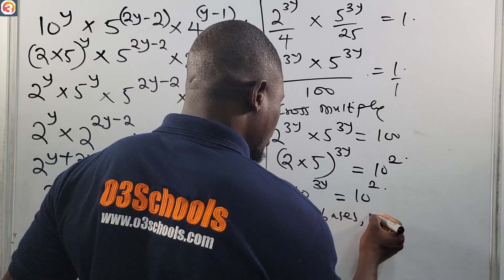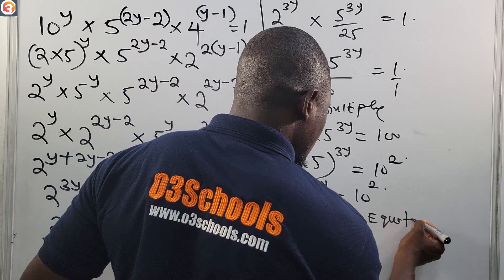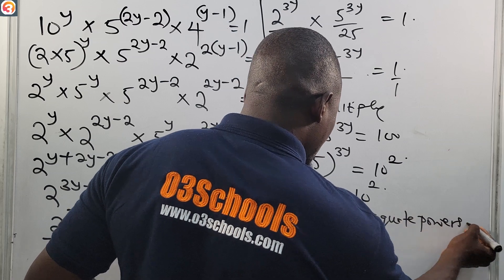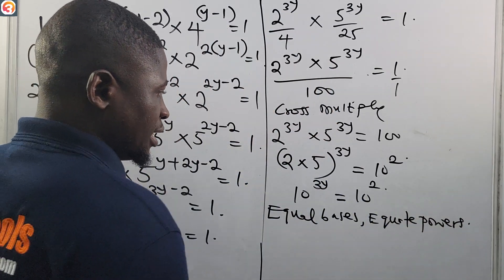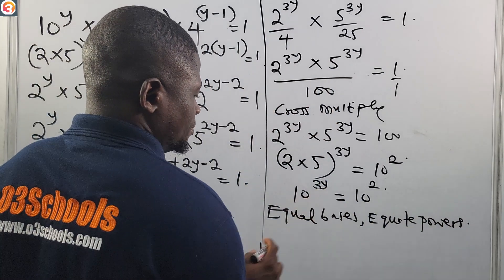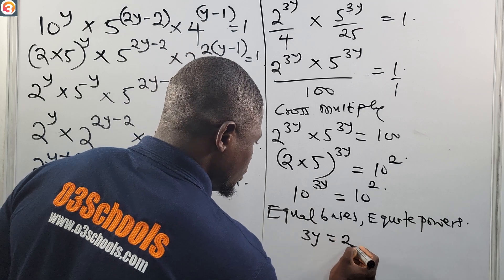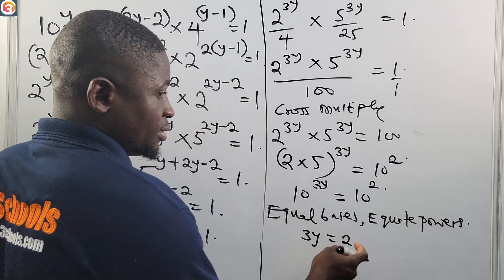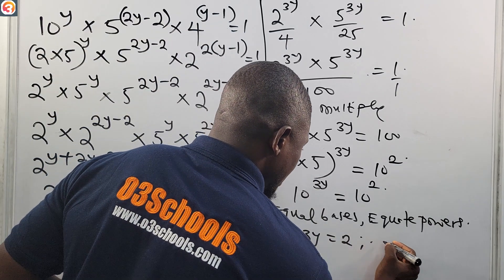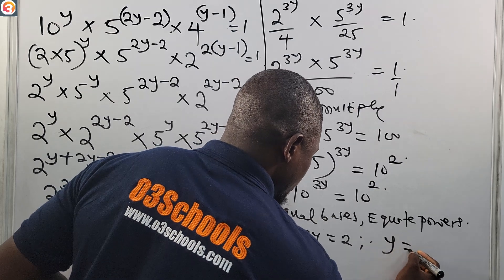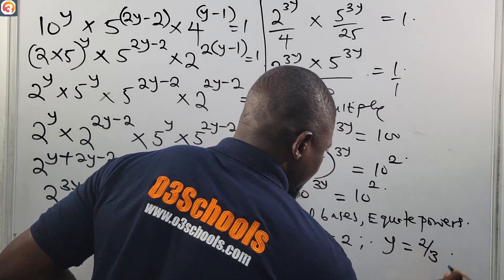The bases are equal, so we equate the powers: 3y equals 2. Dividing both sides by 3, therefore y equals 2 over 3.